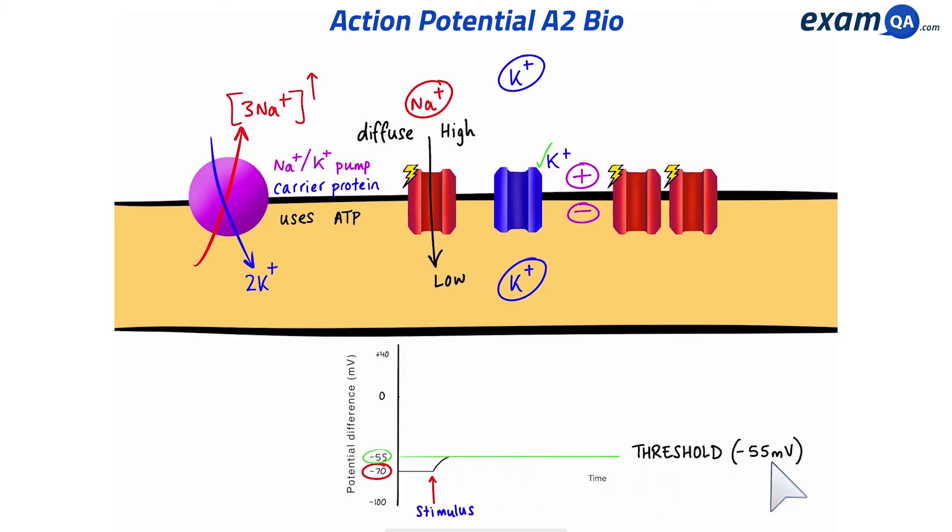This causes lots and lots of voltage-gated sodium channels to open up. These guys love the minus 55 millivolts charge. Because of this, more sodium ions can enter the neuron, and the charge flies up to plus 40 millivolts.